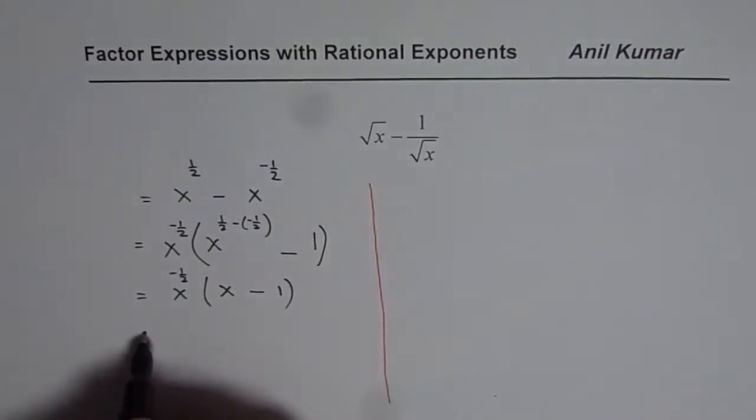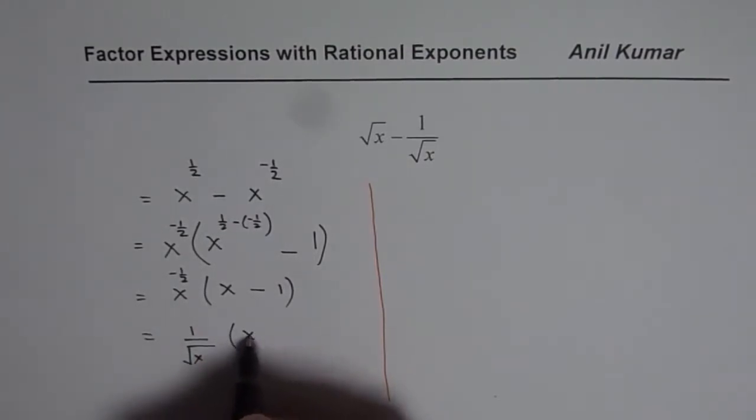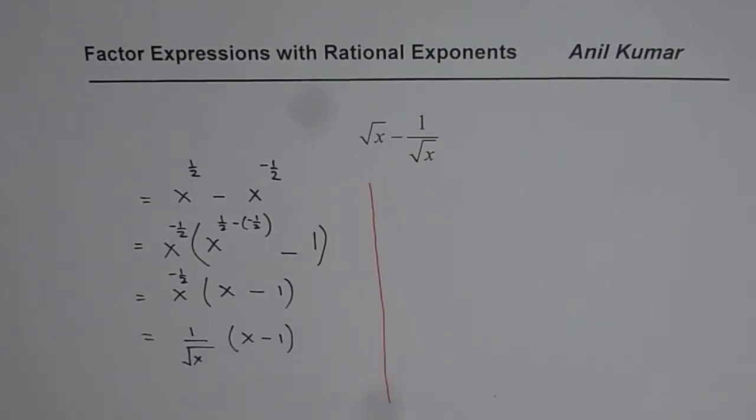So that is what we get which you could write back as 1 over square root of x since x to the power of minus half is 1 over square root of x and here you get x minus 1. You could follow these steps to factor.